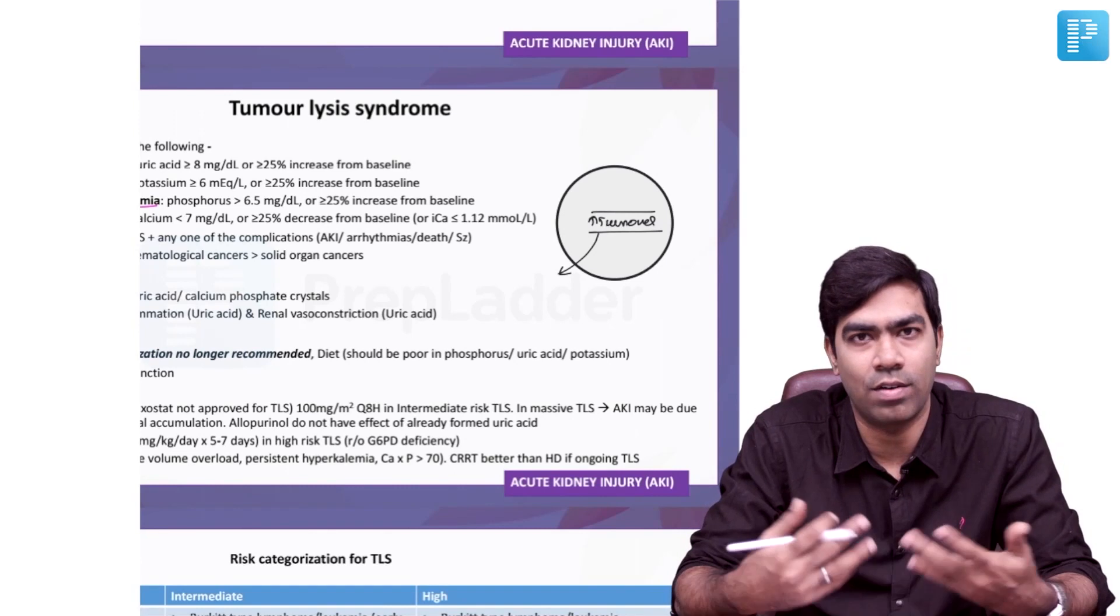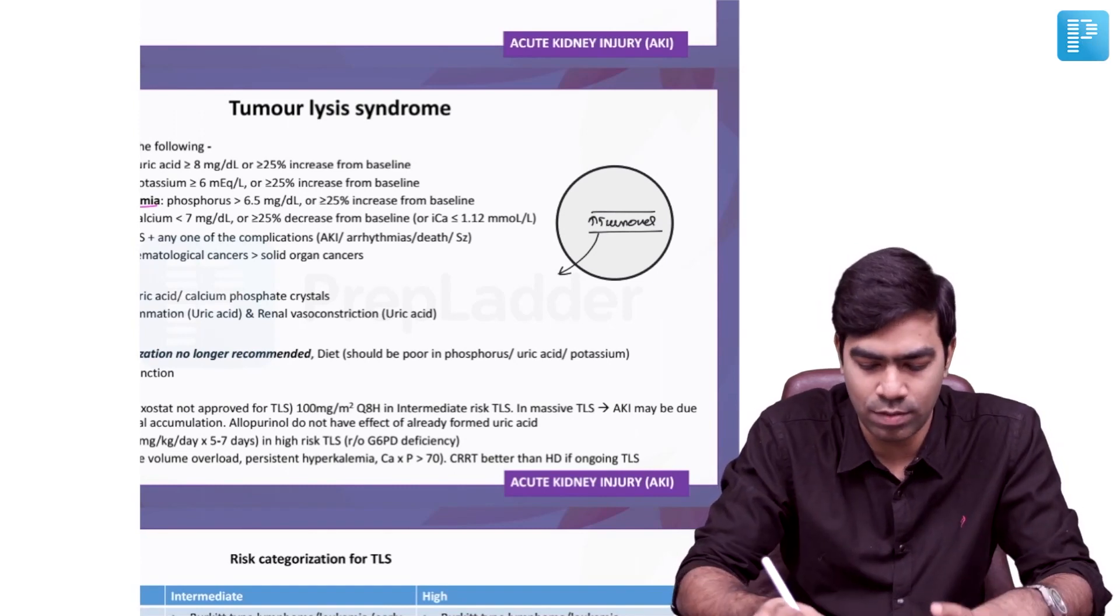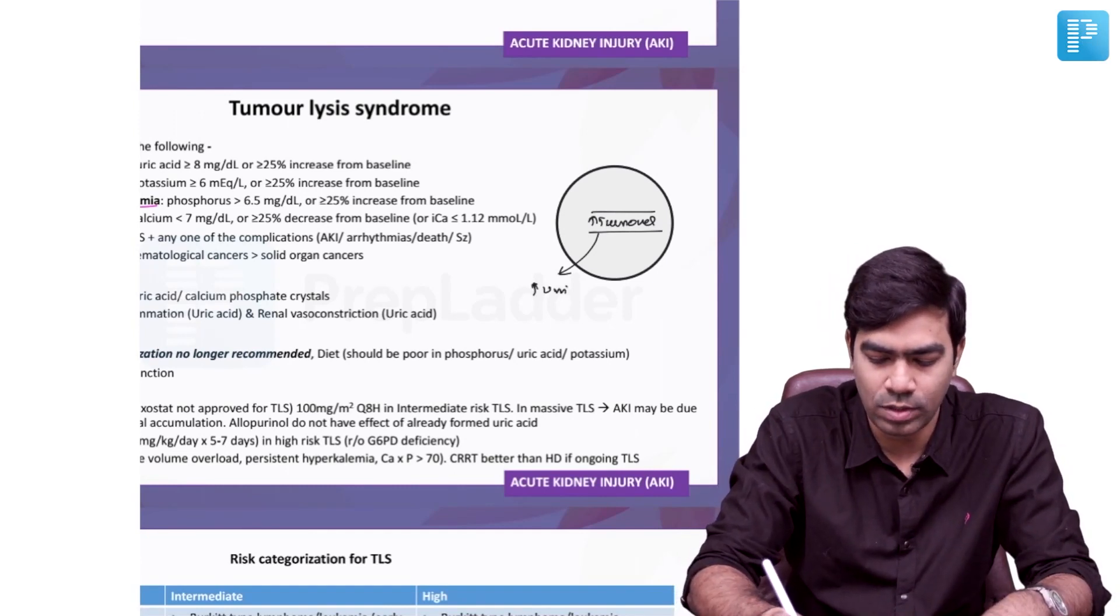For that, you need more purines, and of course there will be more purine turnover also, which produces more uric acid. When the uric acid levels go beyond the critical threshold, more than 6.7 milligrams per deciliter to be exact, they start crystallizing.